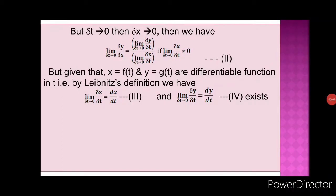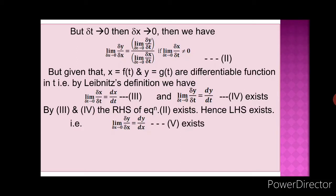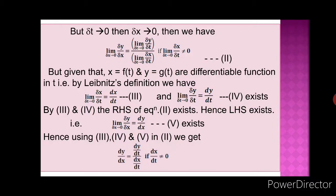Now, as equations 3 and 4 exist, using them in equation 2, the right-hand side of equation 2 exists — numerator and denominator are both finite — provided the denominator is not zero. Hence the left-hand side also exists, and the limit of δy/δx as δt→0 equals dy/dx (equation 5). Using equations 3, 4, and 5 in equation 2, we get dy/dx = (dy/dt) / (dx/dt), which completes the proof of the theorem.